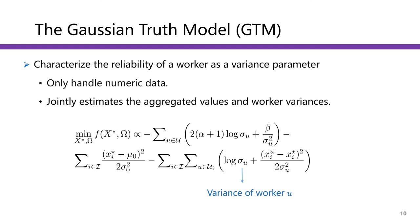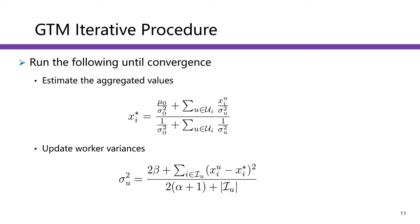In the second step, the aggregated values are fixed and the weight of each worker is updated. These two steps are repeated until some convergence condition is satisfied. The GTM model is a basic model for numerical data in truth discovery. In the GTM model, the reliability of a worker is captured by a variance parameter. A worker with a large variance is more likely to provide inaccurate values. The GTM model formulates an optimization problem to estimate the aggregated values and worker variance, leveraging the EM framework. These two steps are repeated until convergence.